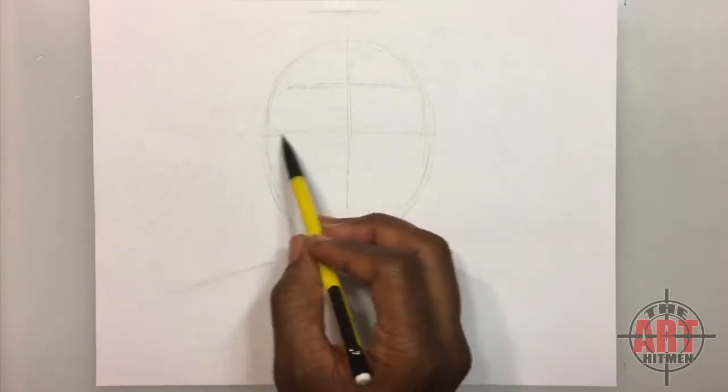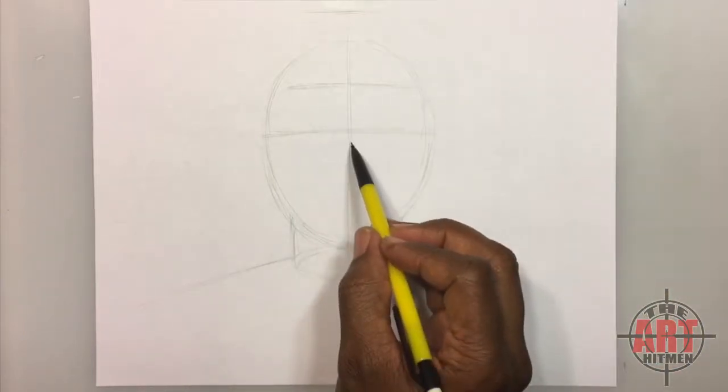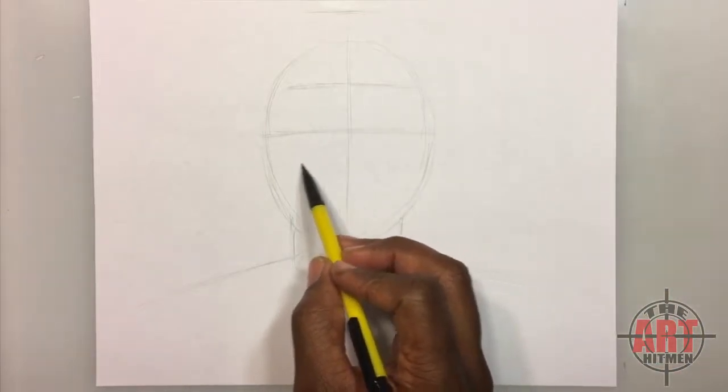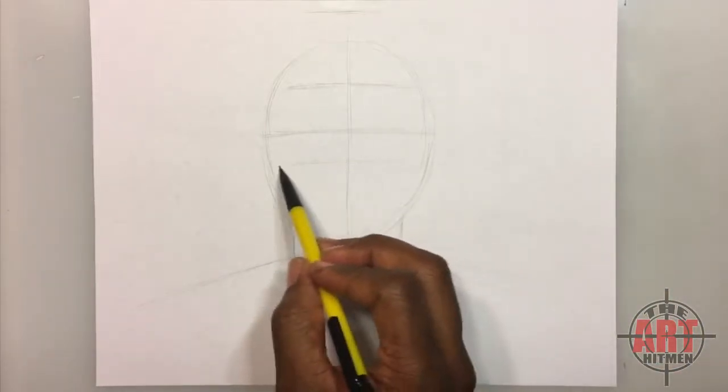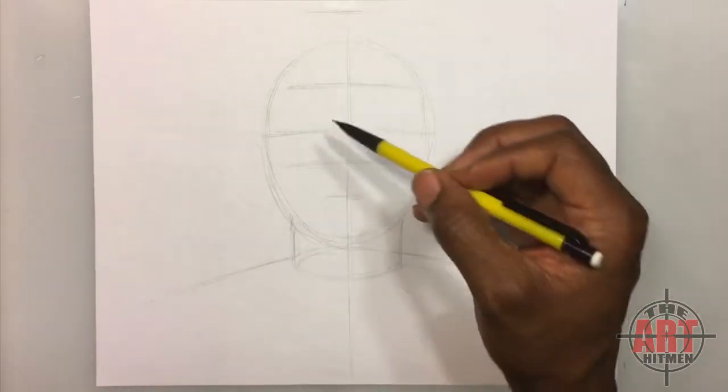We want his eyes to be here, straight across. His nose is going to be higher because his head is back slightly. So we want his nose to be right here and then his mouth to be here.